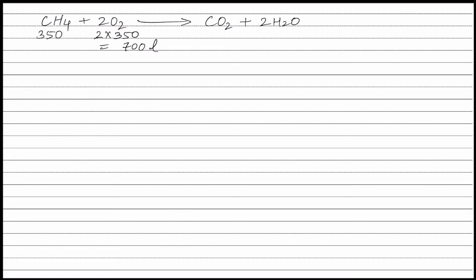The balanced equation for combustion of carbon monoxide is CO + ½O2 → CO2. From the balanced equation, 1 mole of carbon monoxide reacts with half a mole of oxygen. Therefore, 80 liters of carbon monoxide will require ½ × 80 = 40 liters of oxygen to form carbon dioxide.